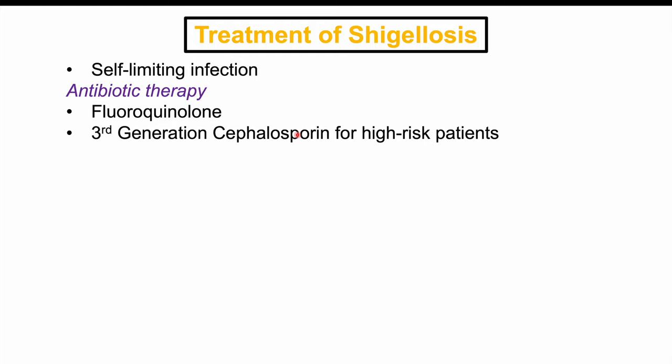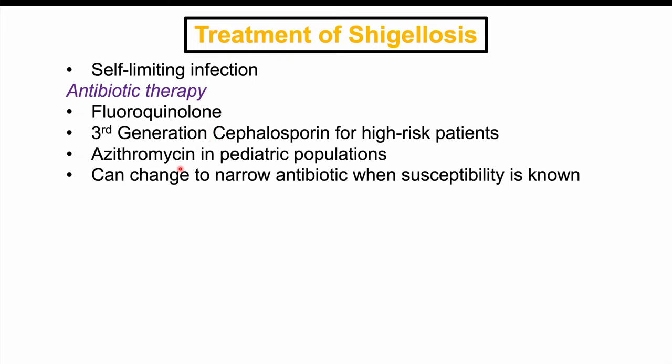Patients who have traveled internationally, especially from the African continent, are also treated empirically due to more severe Shigella species in those regions. Azithromycin is another important empiric antibiotic used specifically in pediatric patients.